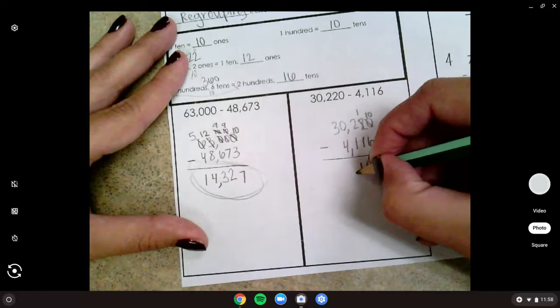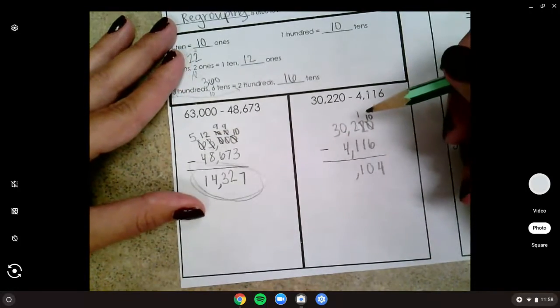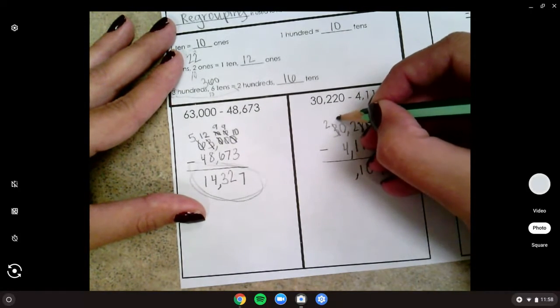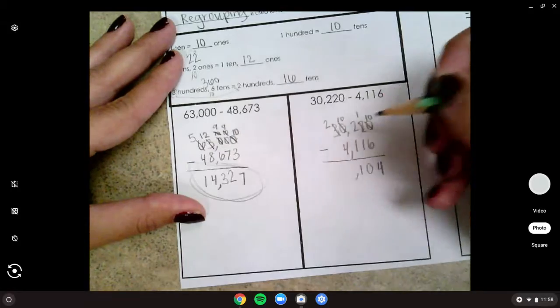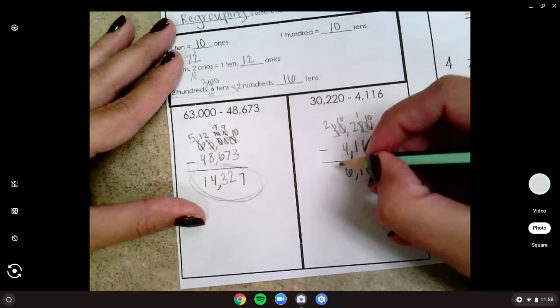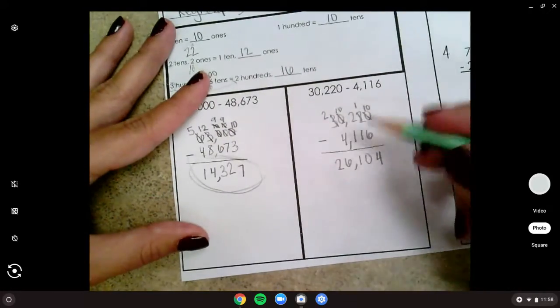All right, so zero minus six, I can't do that. Luckily my neighbor next door can help, so I just have to go one spot this time. Ten minus six is four, one minus one is zero, two minus one is one. I'm into my thousands, so I need my comma. Zero minus four. Oh man, there's more on the floor. So let's go next door and get ten more. So now ten minus four is six, and two minus nothing is two.